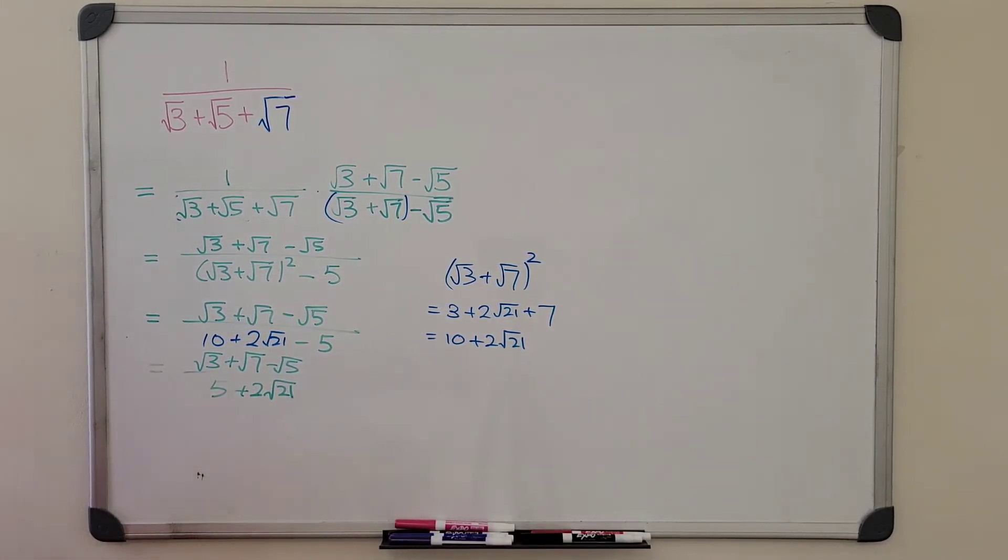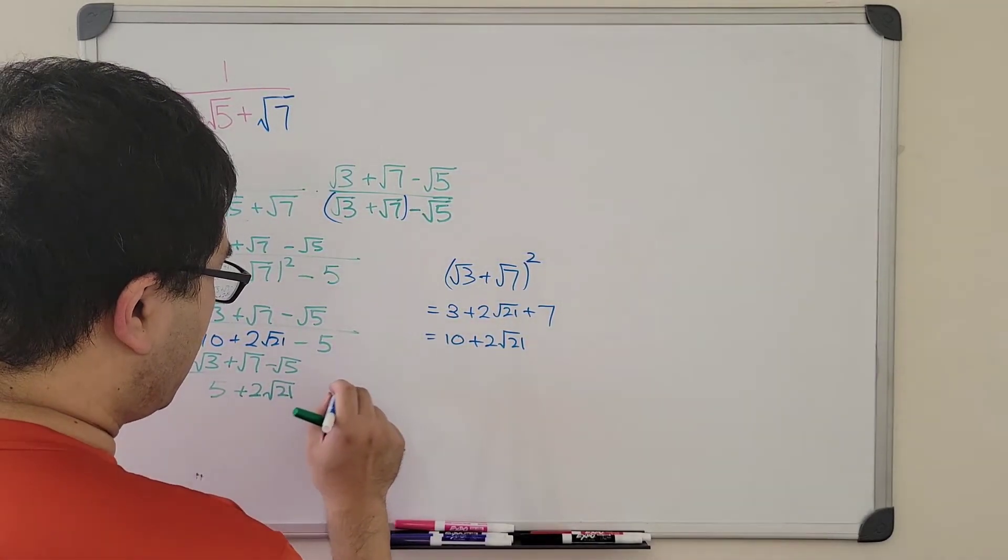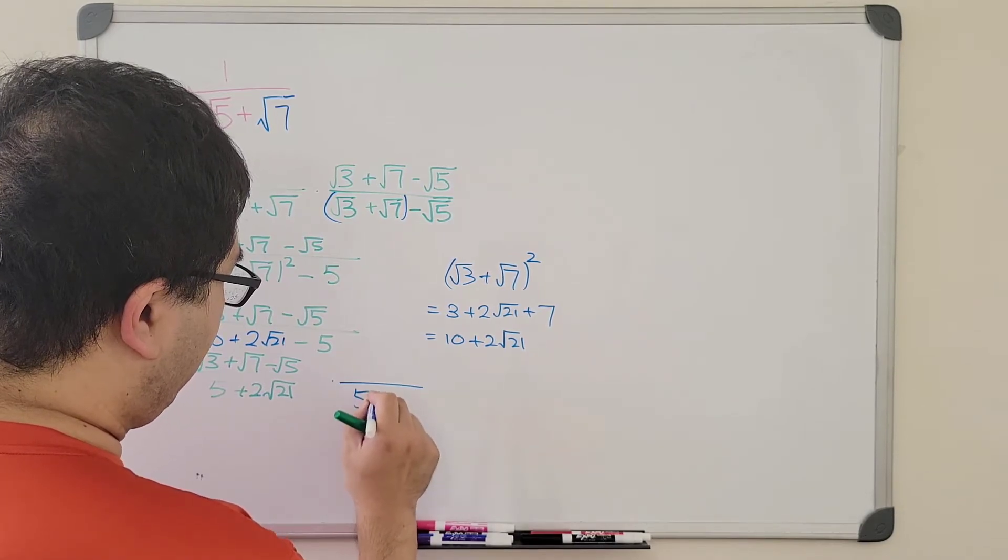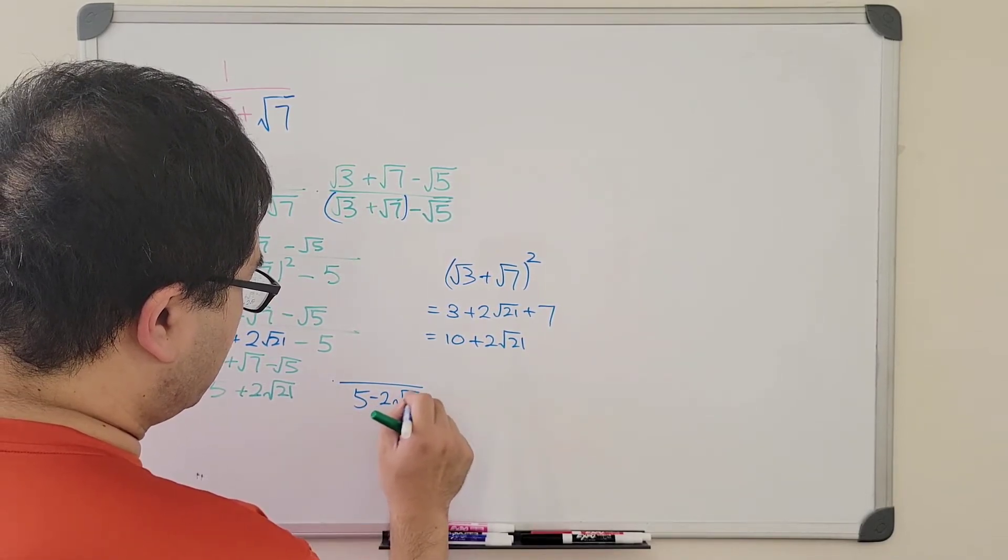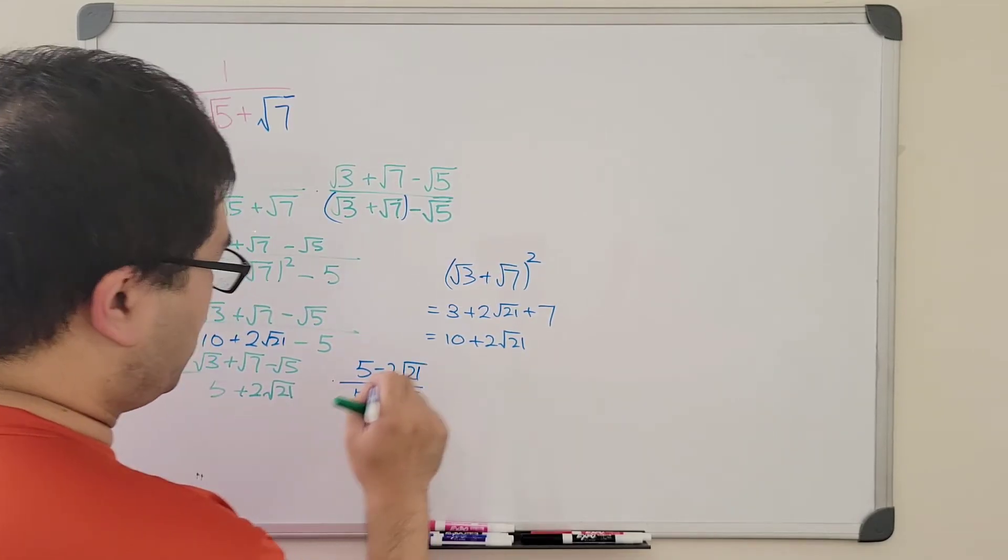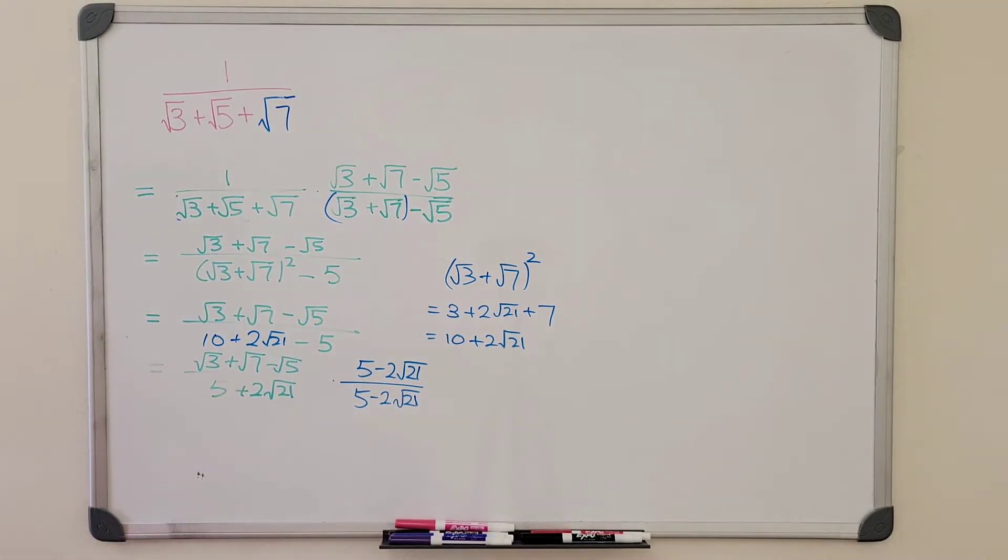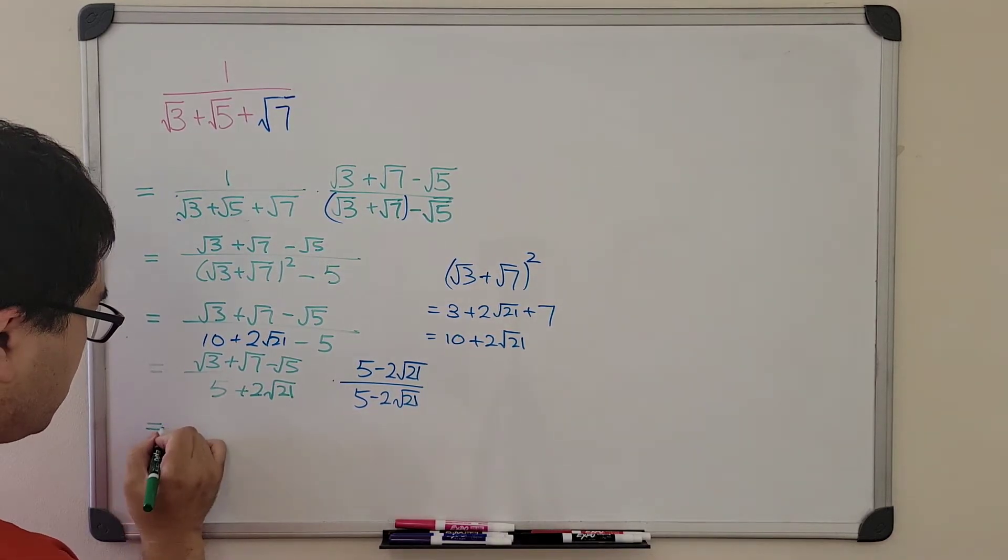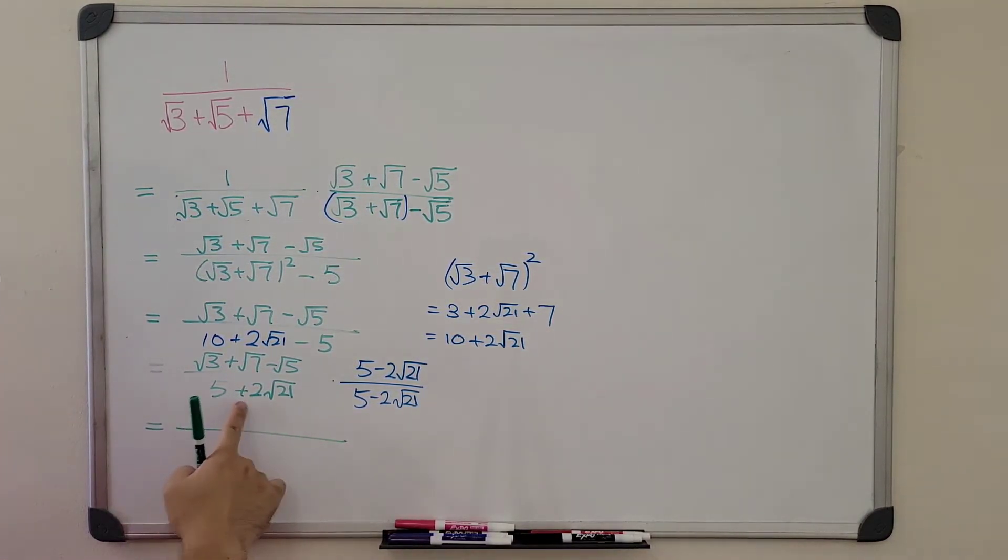So we cannot simply multiply with some square root of some number in order to rationalize the denominator yet. So what do we need to do? There's only one thing we can do. Multiply with the conjugate one more time. Now, this time, we can just simply take the conjugate of this whole thing because there are only two terms. So we will get 5 minus 2 radical 21 as what we are going to multiply.